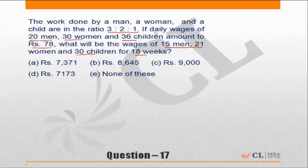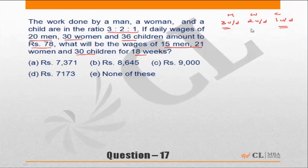The question tells us the work done by man, woman, and child is in the ratio of 3 to 2 to 1. That means if a child does one unit of work per day, a woman will do double that — two units per day — and a man will do three units per day. This also means three children do as much work as one man, or three women do as much work as two men.